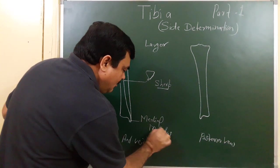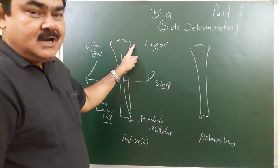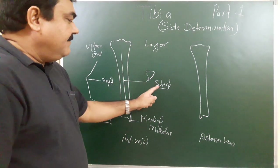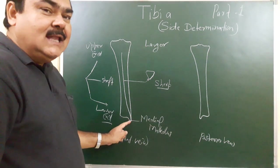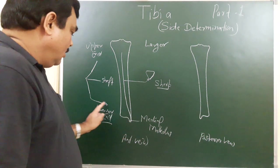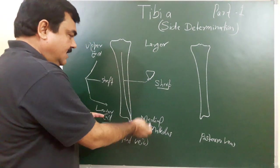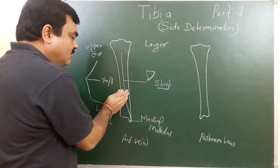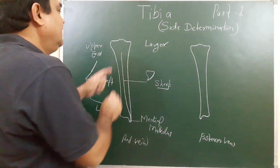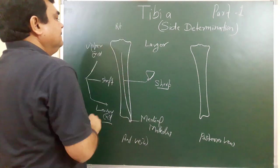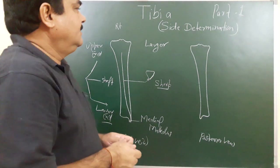So keep three things in mind: the upper end is larger, the shaft's anterior border is sharp, and the medial malleolus lies on the medial side at the lower end. By these three things you can easily identify the side of the bone. This diagram shows the right tibia — this is the right tibia. Thank you.